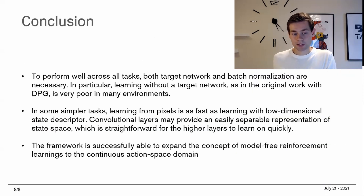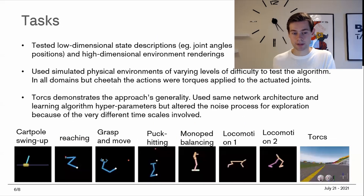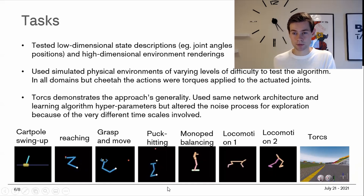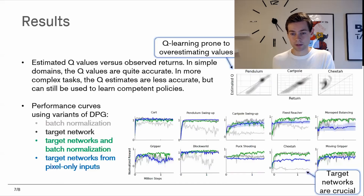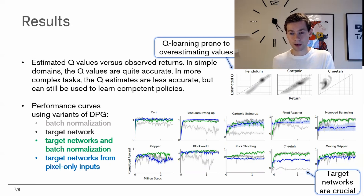To wrap up, the framework successfully expands model-free reinforcement learning to the continuous action space domain. All the tested tasks share the characteristic of having continuous action spaces — joints that aren't just on/off switches but have a continuous range of values. Learning is shown to be effective across these tasks, extending the framework to tackle control problems typically seen in robotics and similar domains where a fixed set of discrete actions is insufficient.